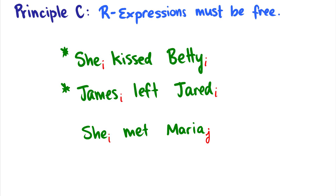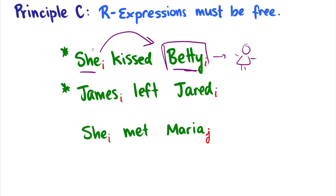Principle C says something fairly straightforward — R-expressions must be free. They can't be co-indexed, they can't be bound, they can't be C-commanded by something co-indexed. So 'she kissed Betty' is not okay if 'she' and 'Betty' are the same person, because 'Betty' refers to something in the world but 'she' has no referent. Betty has its own meaning, so we can't adopt another meaning from 'she.' Therefore the sentence is bad.